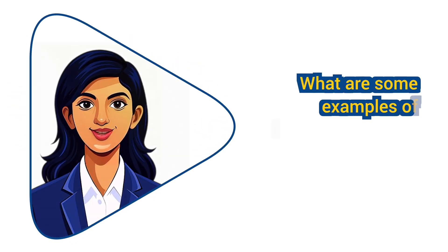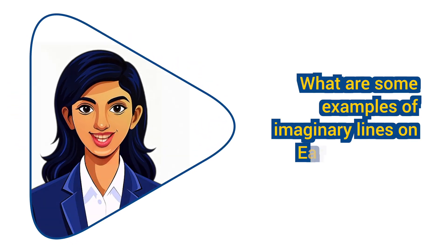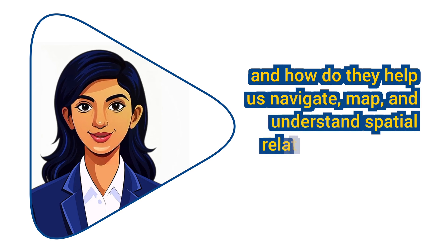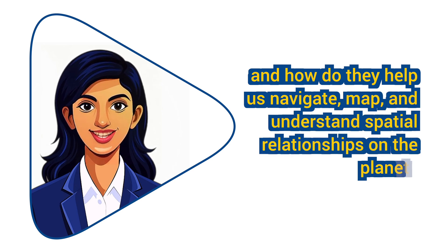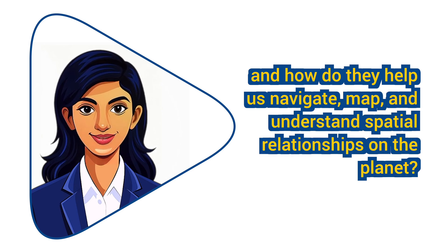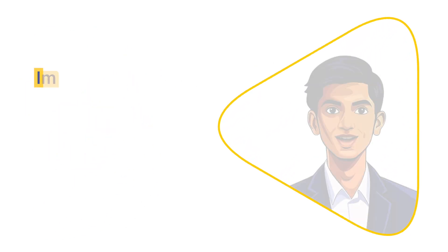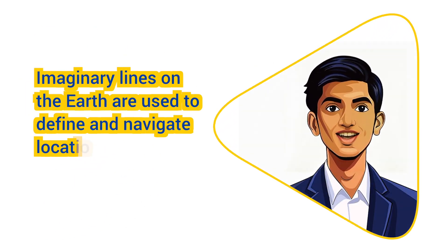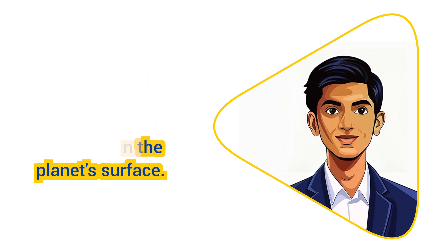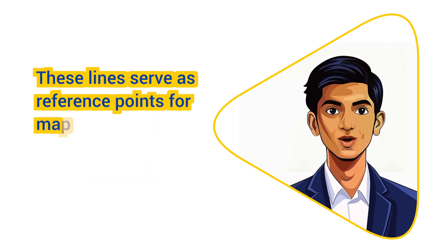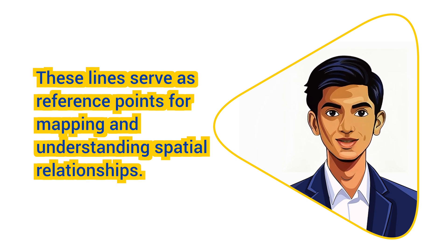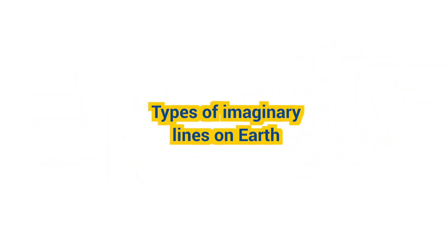What are some examples of imaginary lines on Earth's surface, and how do they help us navigate, map, and understand spatial relationships on the planet? Imaginary lines on the Earth are used to define and navigate locations on the planet's surface. These lines serve as reference points for mapping and understanding spatial relationships. Here are some key types of imaginary lines on Earth.